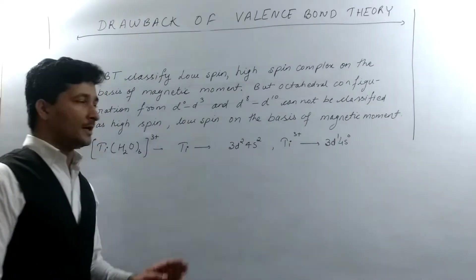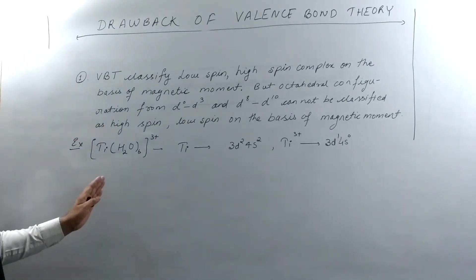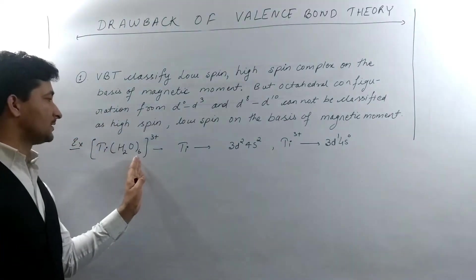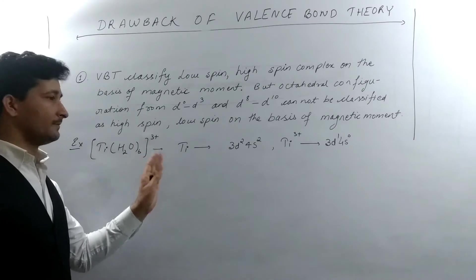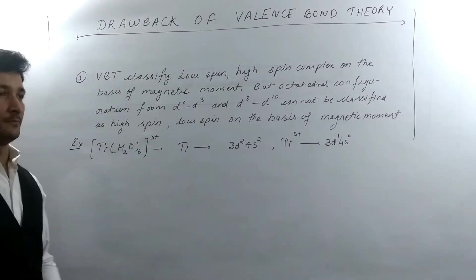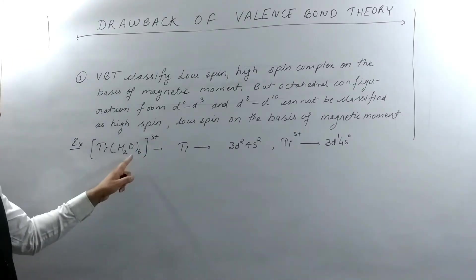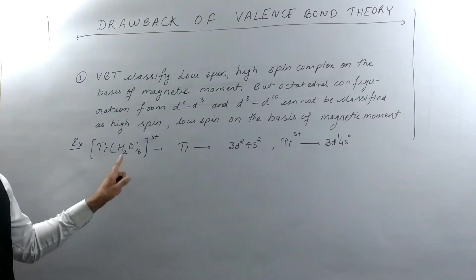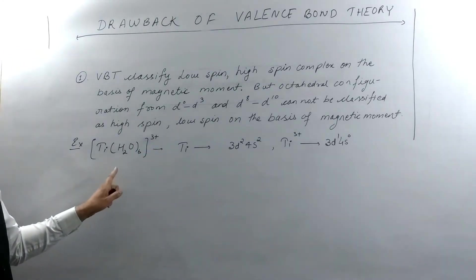If it forms an octahedral complex with [Ti(H₂O)₆]³⁺, meaning six molecules of H₂O are bound to Ti via coordinate bonds, then we can analyze its orbital hybridization.